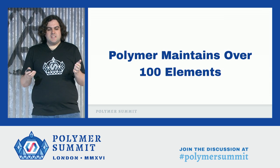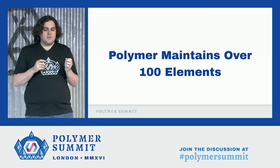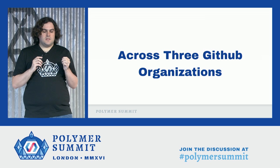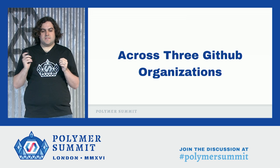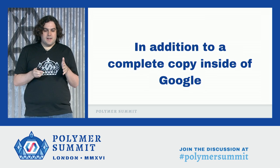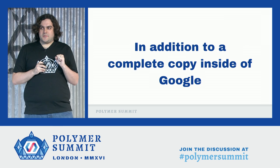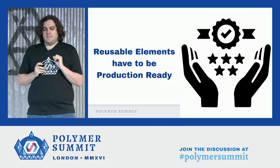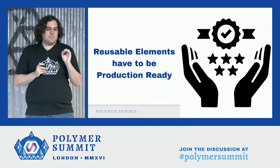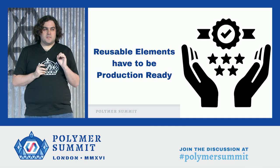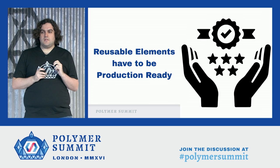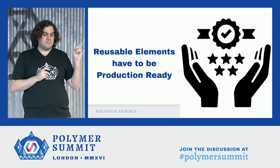In order to meet the needs of Google and other customers, Polymer has to maintain over 100 elements across three GitHub organizations, with an additional copy inside of Google's internal source control system. To make sure these reusable elements keep their promise to save the application developer time, they have to be highly tested, have great documentation, and contain understandable code — and that means they need to be production ready.